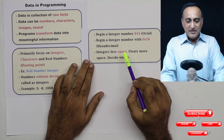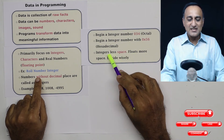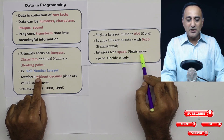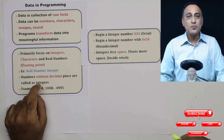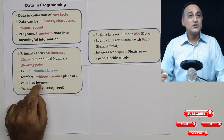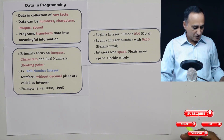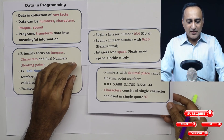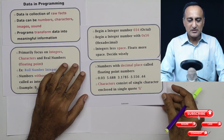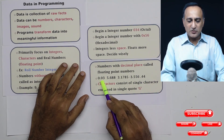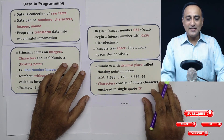Integers are useful — for example, it makes much more sense to store a roll number as an integer than as a real number, because real numbers occupy more space and take more computer power to process. So where possible, use integers, and only use real numbers or floating point numbers when unavoidable. Numbers with decimal places are called floating point or real numbers.